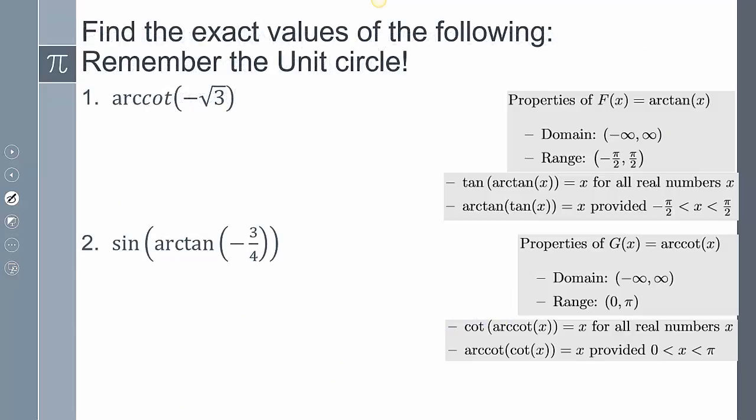So practicing a few more, I have arccotangent of -√3. And so examining that on the unit circle, I know that arccotangent, which is going to be cosine over sine, is going to be √3 here. Which means over here it should be -√3. And so that value is going to be 5π/6. Now that's going to be between 0 and π, so that works.